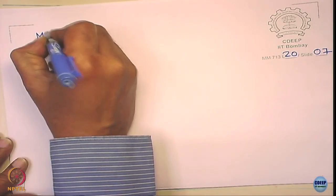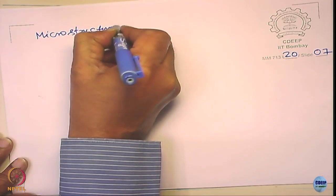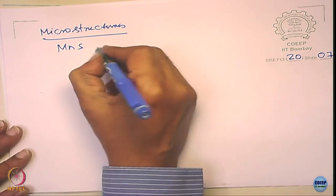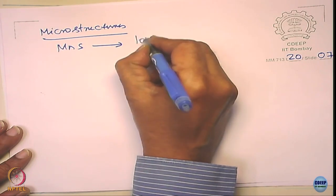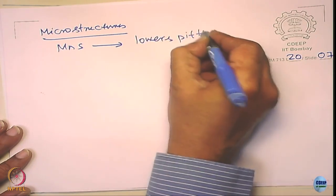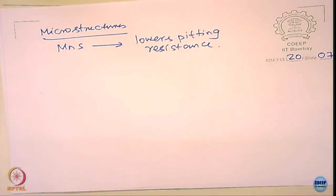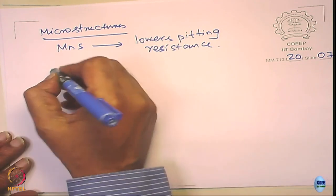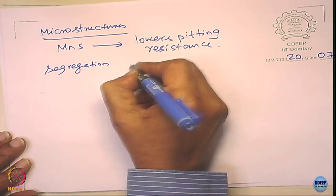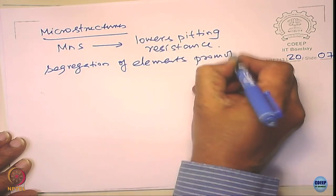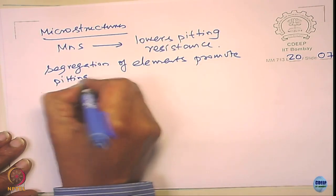Now let us go to microstructures. Suppose you have some phases which are selectively corroding — like manganese sulfide — what happens? It lowers pitting resistance due to selective dissolution attack. Any phase prone to corrosion will promote corrosion. Similarly, segregation of elements promotes pitting.